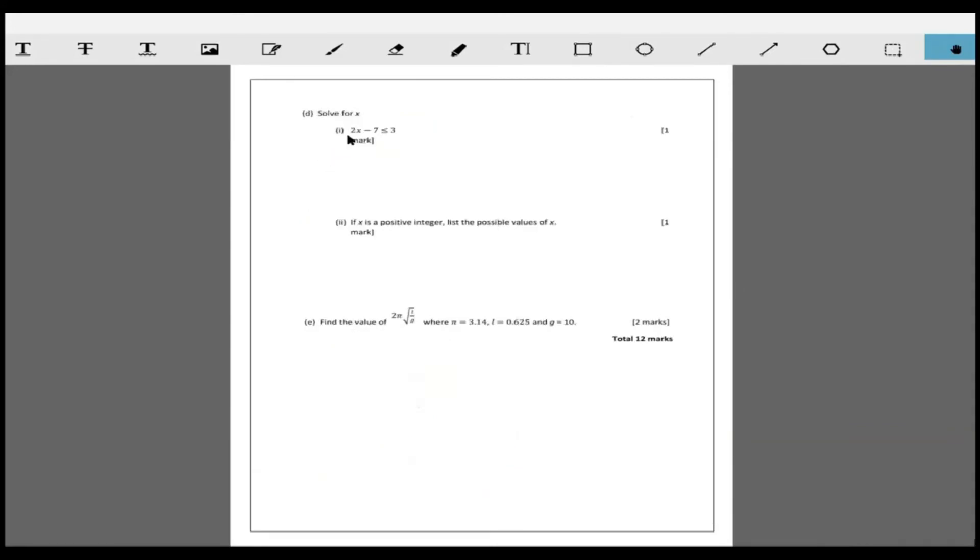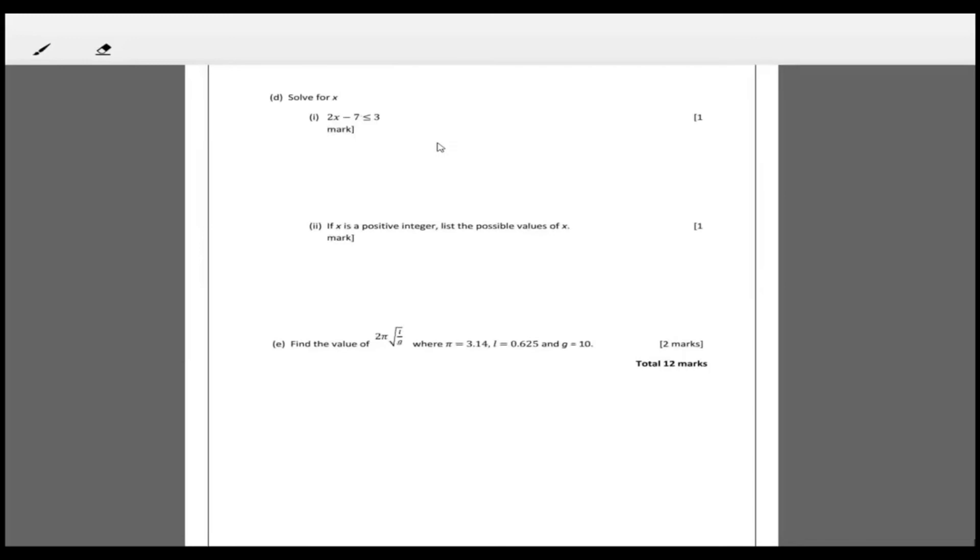Now it says solve for x. It says 2x minus 7 is less than or equal to 3. So if we add 7 to both sides we're going to see that 2x is less than or equal to 10, and then when we divide through by 2 we're going to get that x is less than or equal to 5.